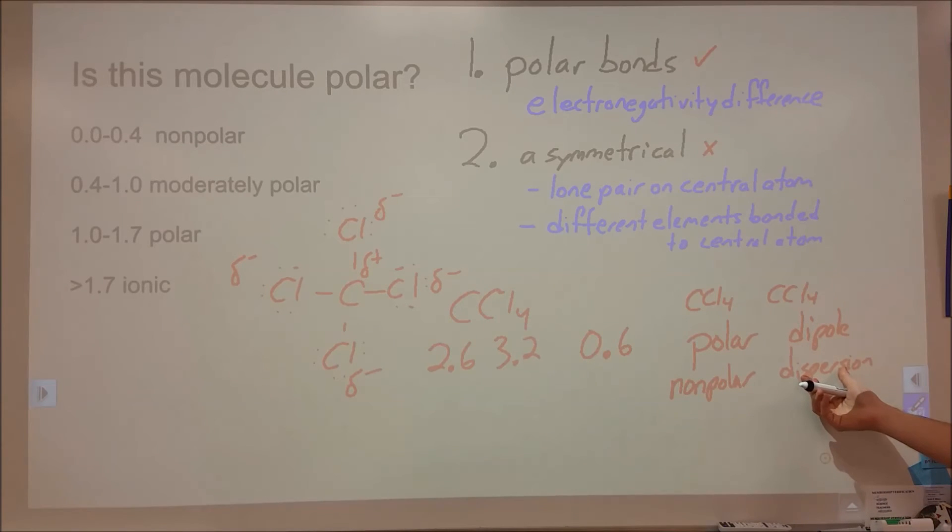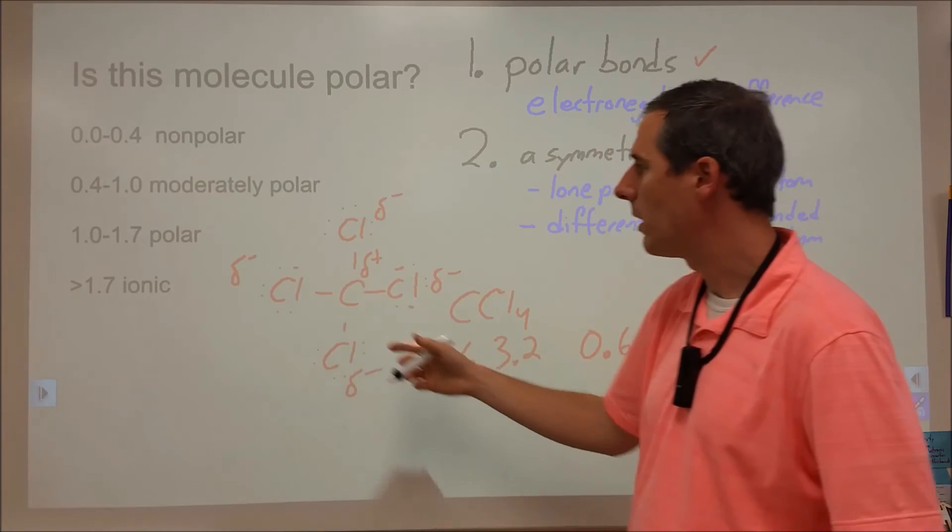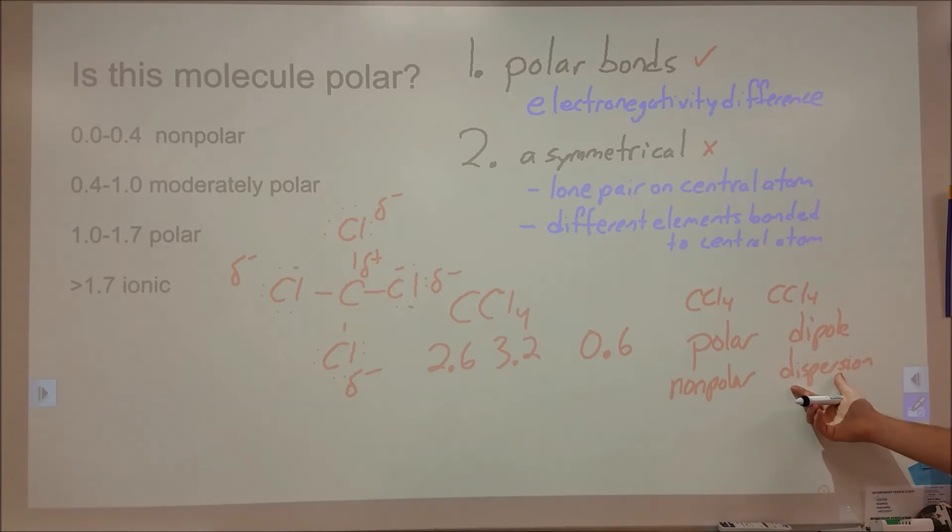Now keep in mind that dispersion forces become larger as the number of electrons grows. So the fact that I have a pretty significant number of electrons here means that I might still have a decent attraction between carbon tetrachloride molecules relative to something that's maybe polar, but is very small with very few electrons. But we would expect it to be relatively weak, especially compared to something such as bonds.